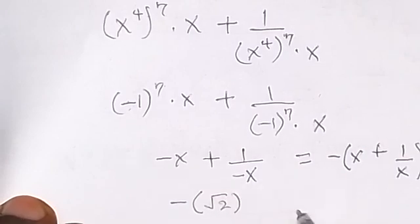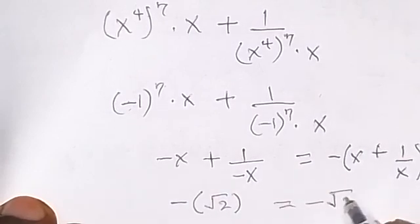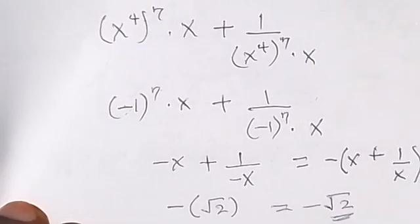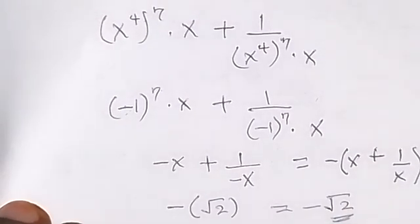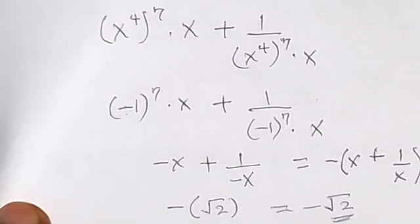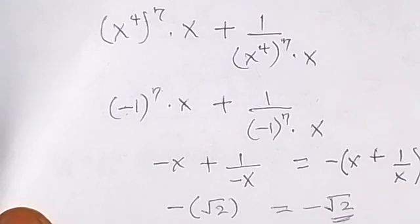We know that x plus 1 over x from the question is root 2, so this becomes minus times root 2, which is minus root 2. That is the solution to the problem. Thank you for joining us — please subscribe to this channel for more videos, post your comments, and don't forget to click the like button. See you in the next class.